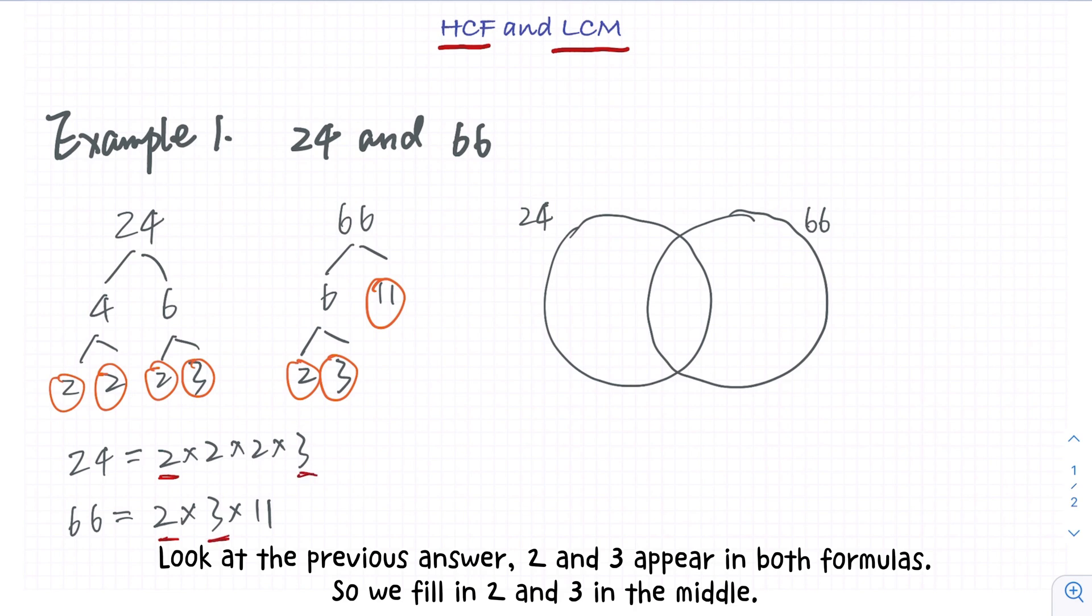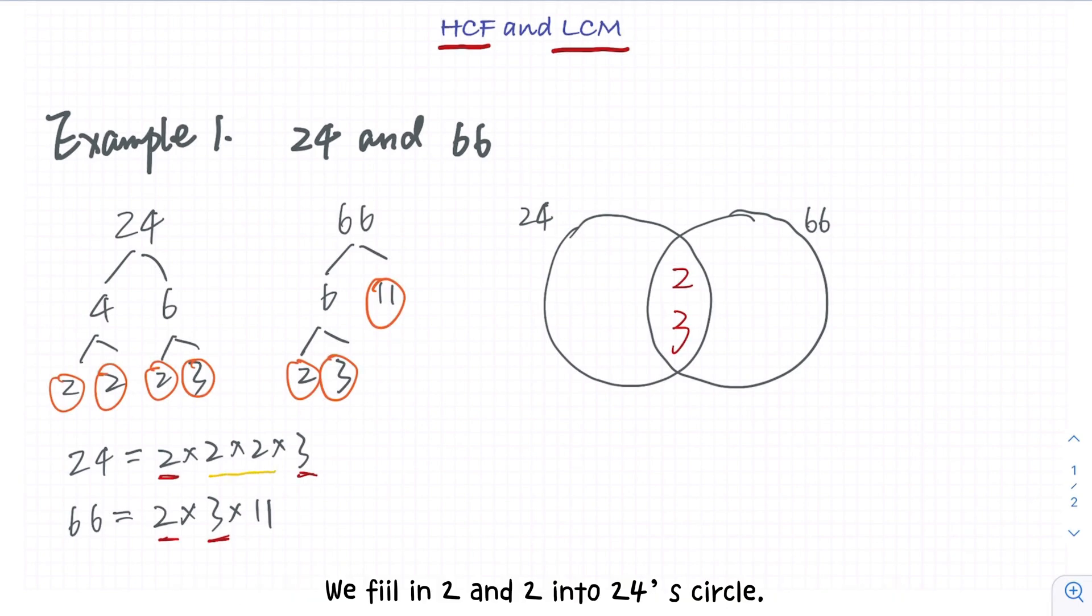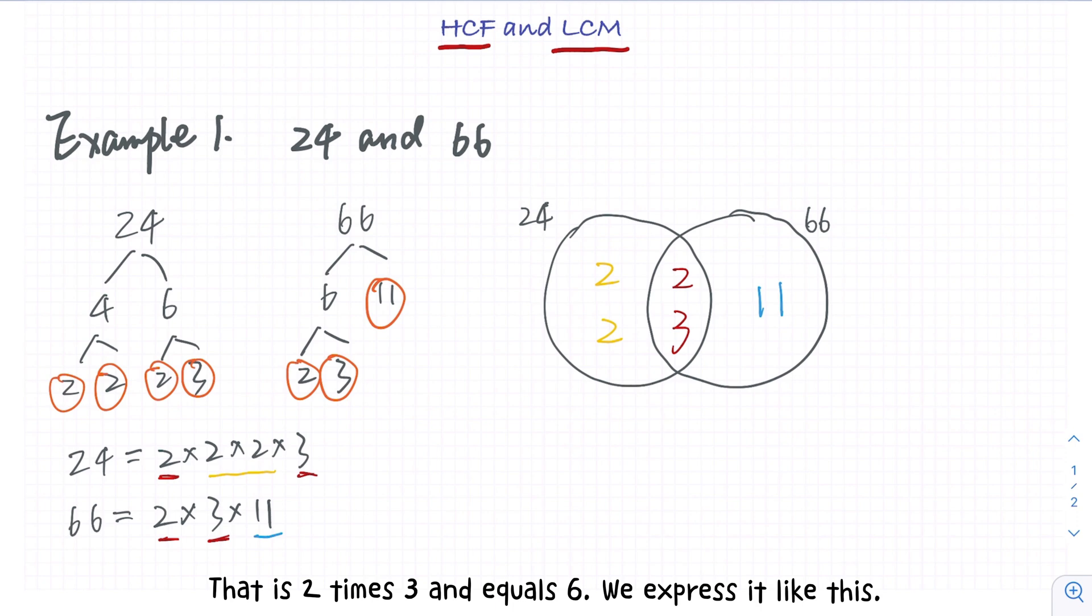Then the numbers left over go in the circle they belong to. We fill in 2 and 2 into the 24 circle and fill in 11 into the 66 circle. Now we can make it clearer. The highest common factor equals the product of the numbers in the middle, that is 2 times 3 and equals 6.